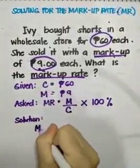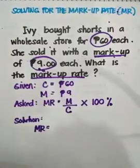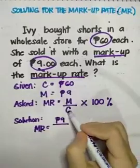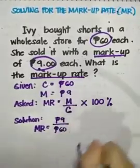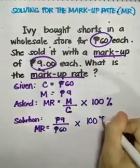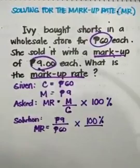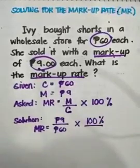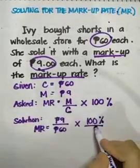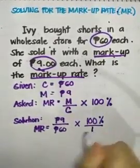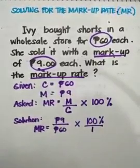Let's solve. MR equals what is our markup, so 9 pesos, then divided by the cost which is 60 pesos, then multiply by 100. Again, 100 is a constant so you cannot replace it or change it to any other number. When we multiply whole numbers with fractions, we have to make the whole number into a fraction first by putting a denominator of 1.